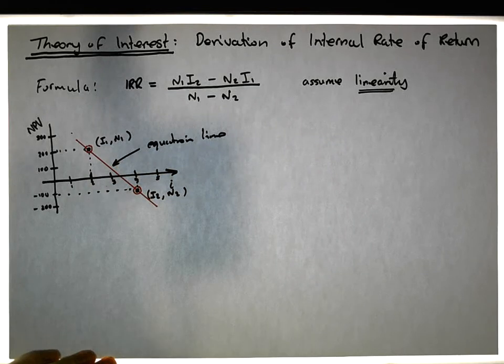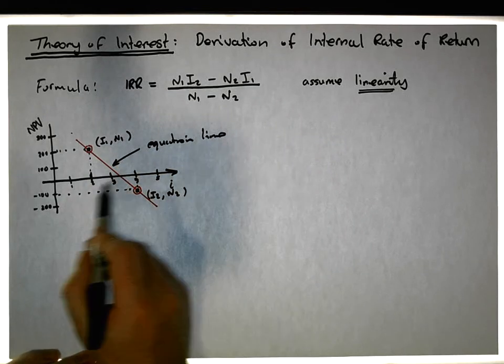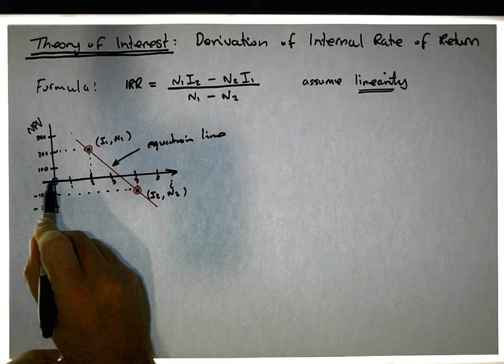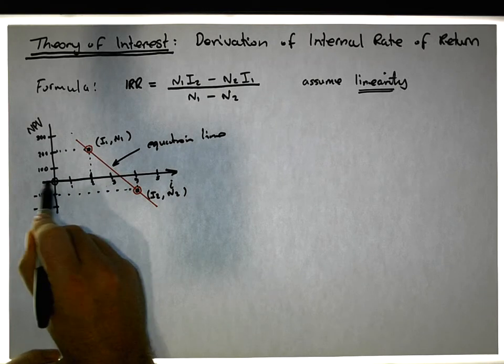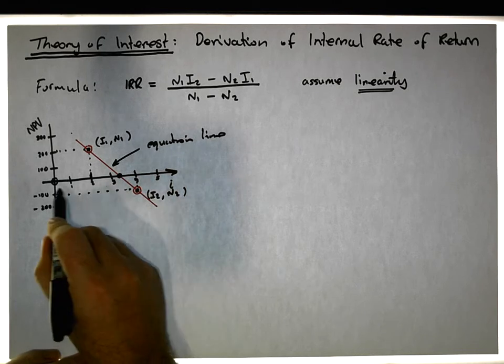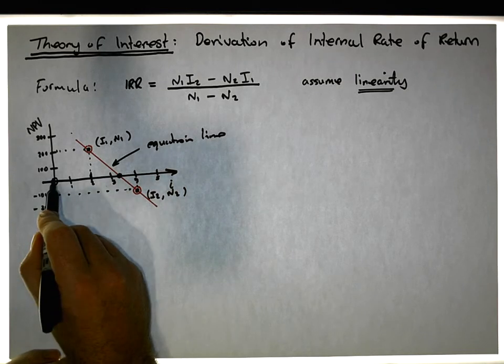Points here on that particular line, we could solve it for when y is equal to zero. When y is equal to zero, what we'd end up with is this specific value here. So what we're saying is when the net present value is zero, the line actually intersects this interest rate axis.